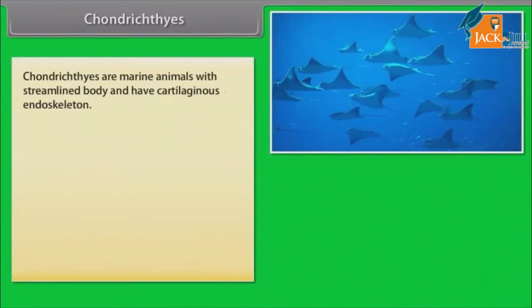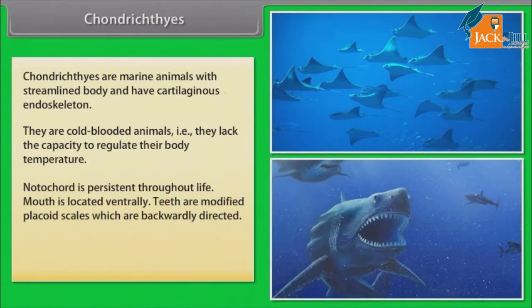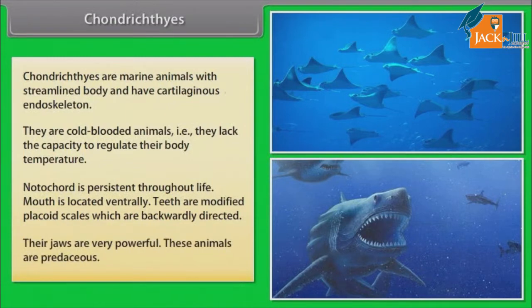Chondrichthyes are marine animals with streamlined body and have cartilaginous endoskeleton. They are cold-blooded animals, that is, they lack the capacity to regulate their body temperature. Notochord is persistent throughout life. Mouth is located ventrally. Teeth are modified placoid scales which are backwardly directed. Their jaws are very powerful. These animals are predaceous.